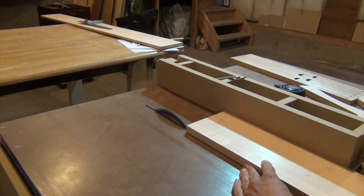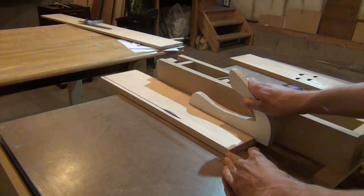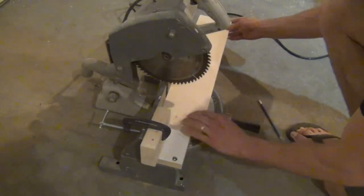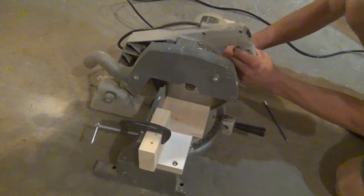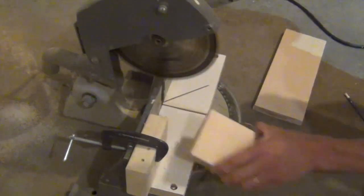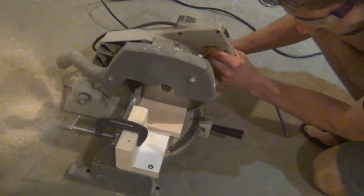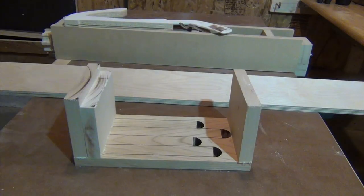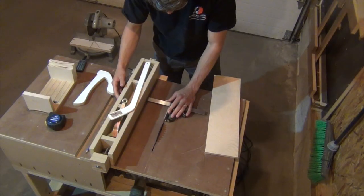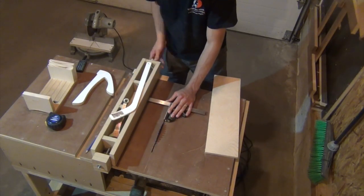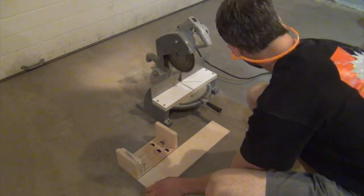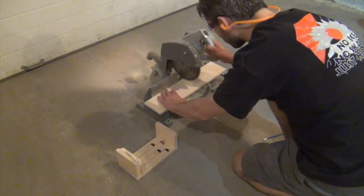I used the top to set my fence, then ripped some maple to width. These will be used for the end pieces. And then I cut everything down to size with the miter saw. I repeated the process for the sides of the box using some half-inch plywood.